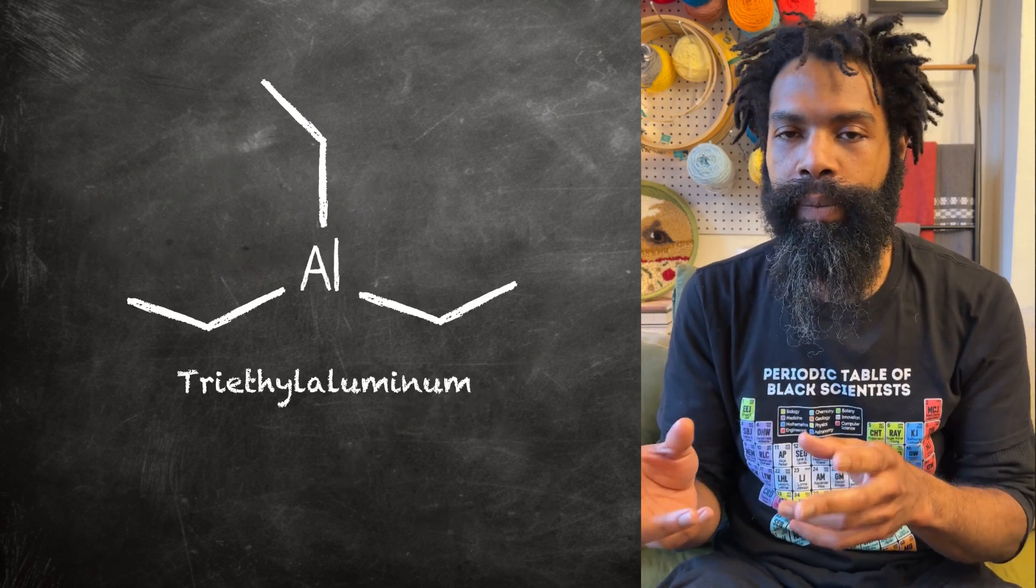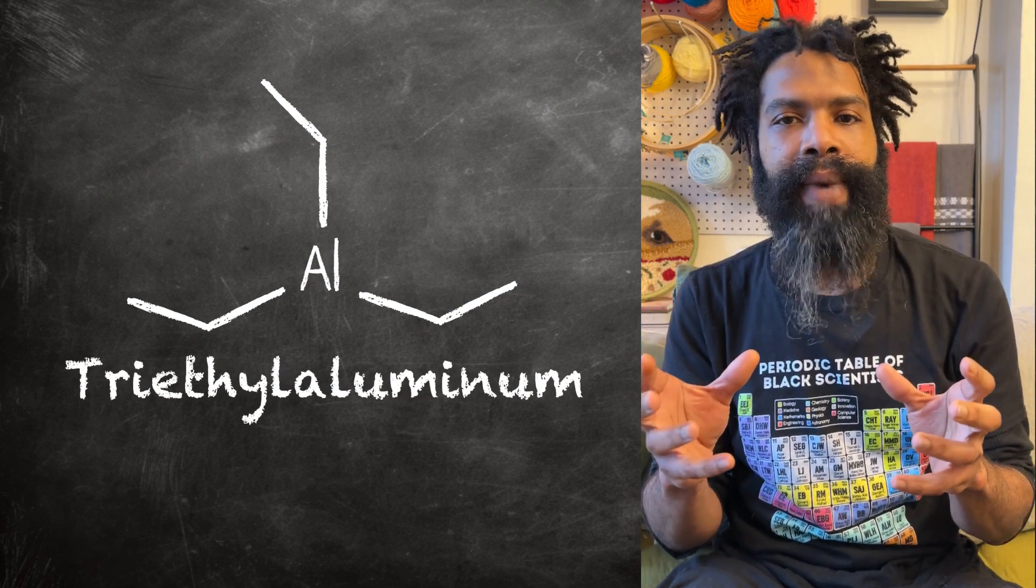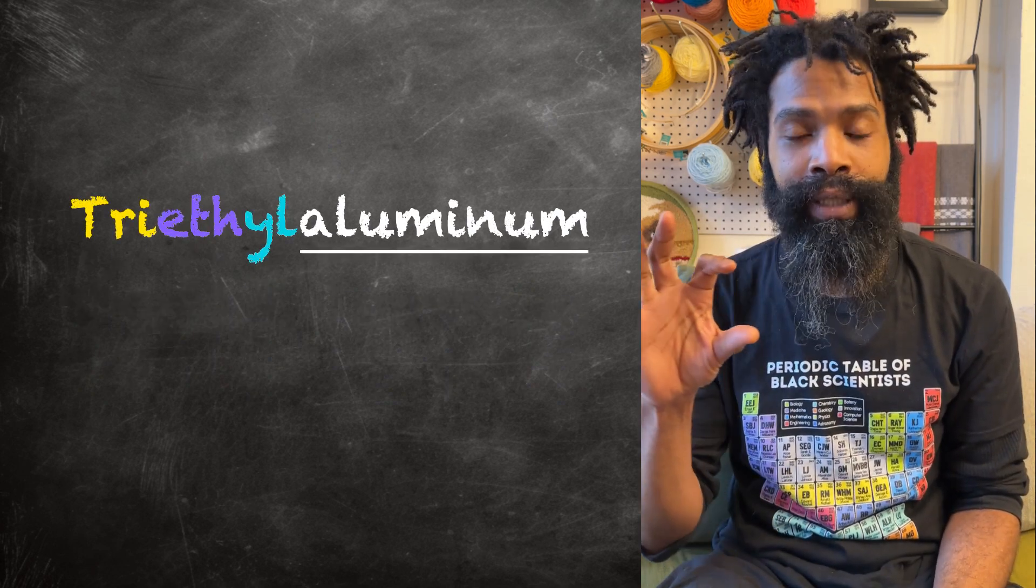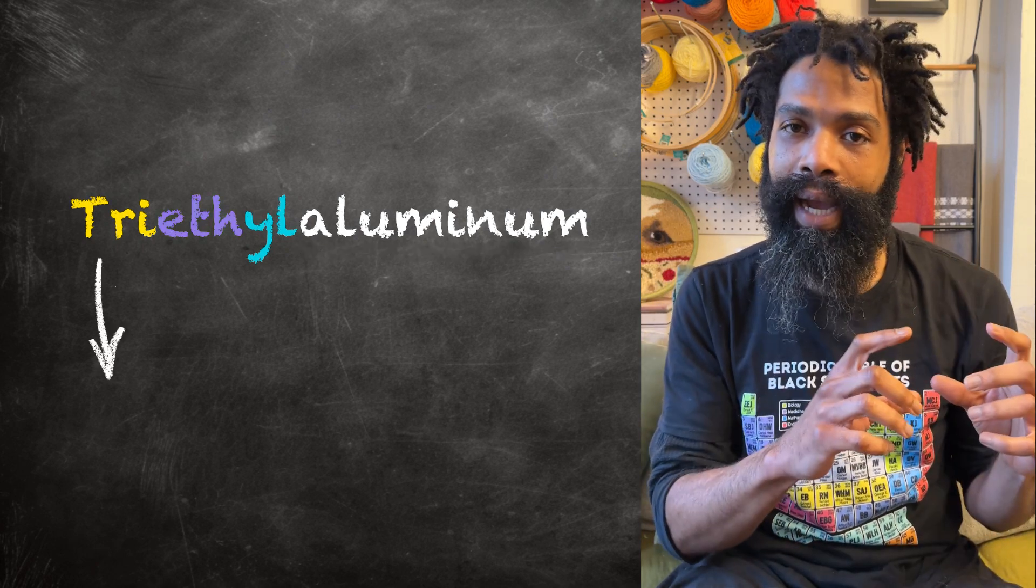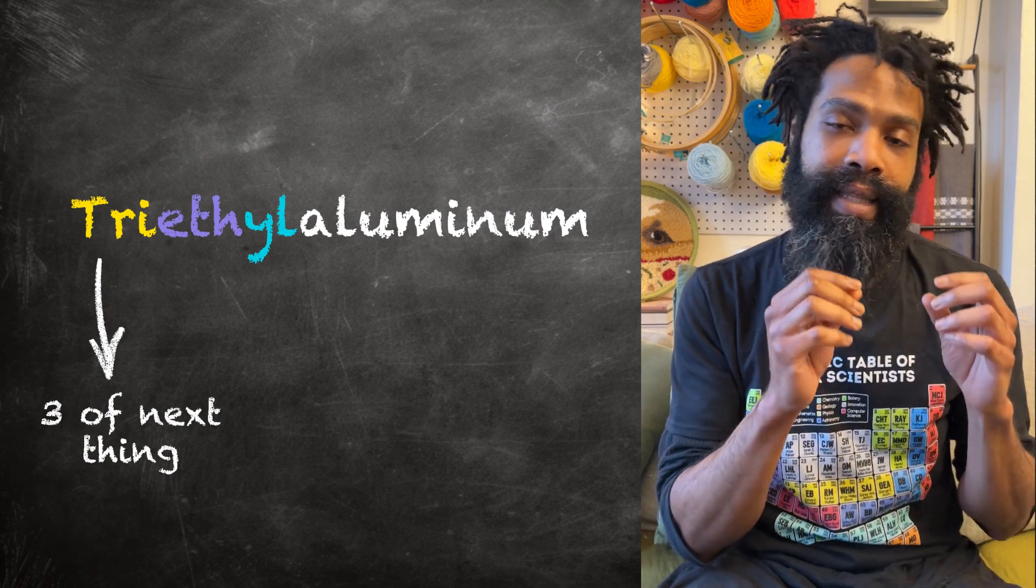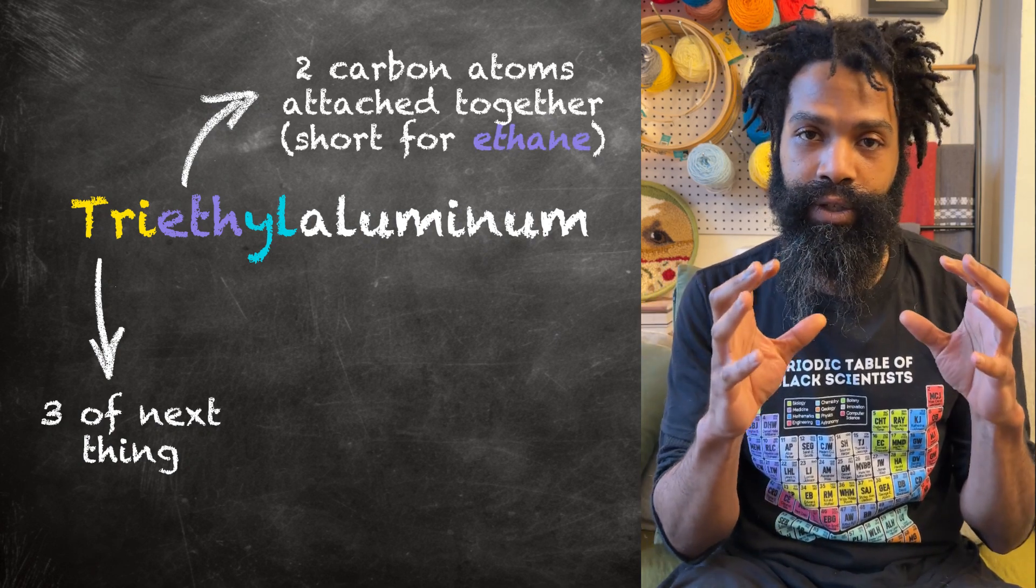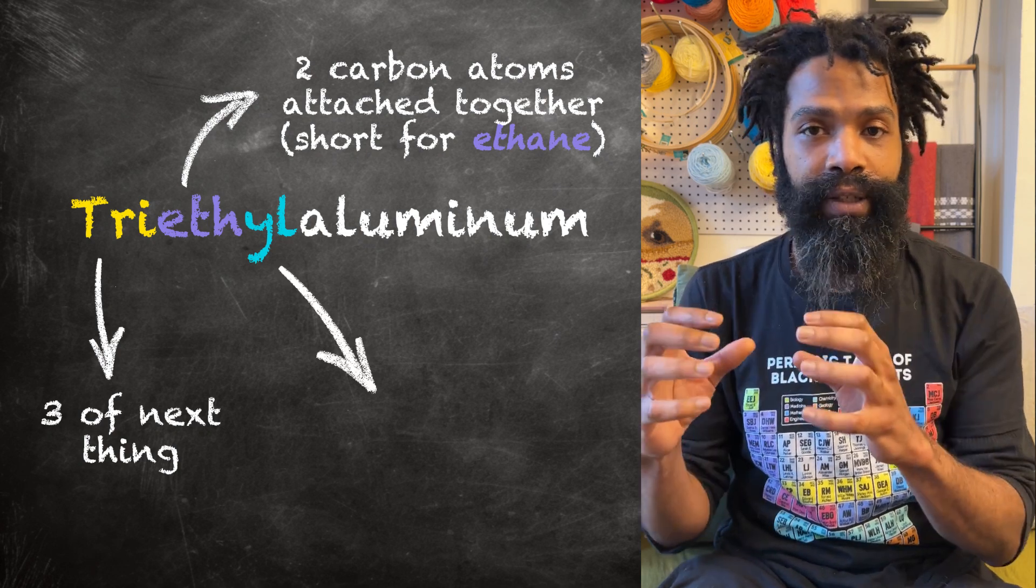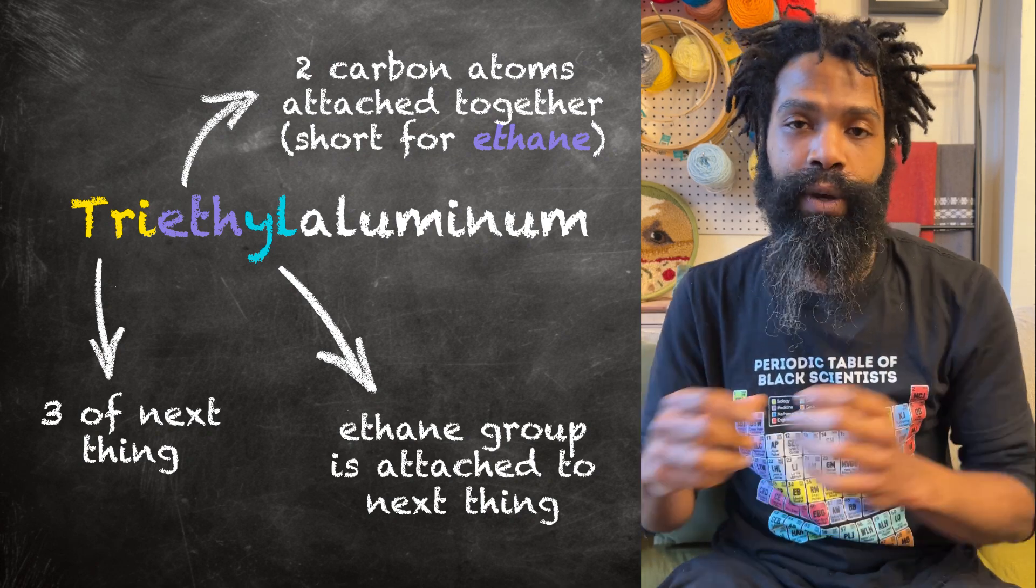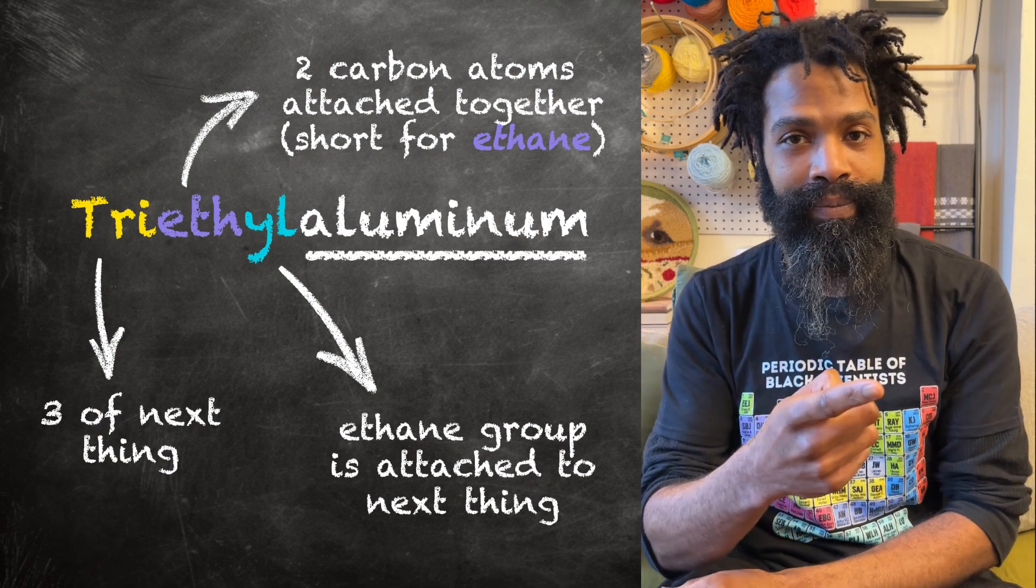Let's start with triethyl aluminum and let's just start with the name because the name is more or less its systematic name. The name itself, triethyl aluminum, has four parts - yes, the 'yl' is its own part. The first part 'tri' tells me that there are three of whatever's coming next. Then there's the 'eth' part, and what the 'eth' part tells me is that there are two carbons attached to each other. And there are three of these, and the 'yl' tells me that that's a two-carbon group attached to whatever's coming next.